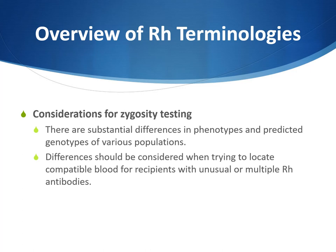An overview of Rh terminologies: there can be some testing differences depending on zygosity for a gene. You can be either homozygous or heterozygous. For example, if you have both big C and little c, you are heterozygous for the C gene. Someone who is big E positive and little e negative is homozygous for big E. There are substantial differences in phenotypes and genotypes in various populations, which should be considered when locating compatible blood types for recipients with unusual or multiple Rh antibodies.